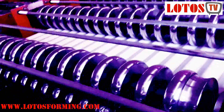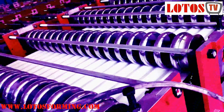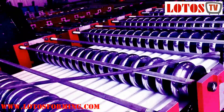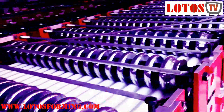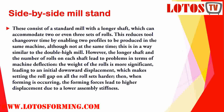Please pay attention to the double high mills — you can see mounting of the tooling stand on the bottom layer and now testing the upper layer of the tooling stand. Now we are going to the final and last type of tooling stand: side by side mills. This consists of standard mills with a longer shaft that can accommodate two or even three sets of rolls.